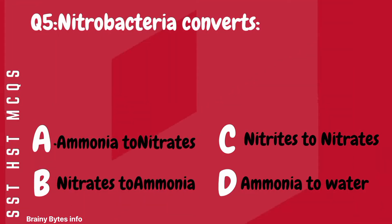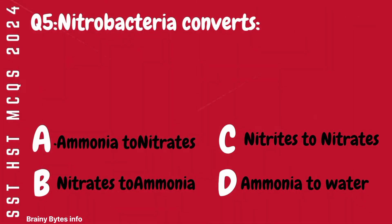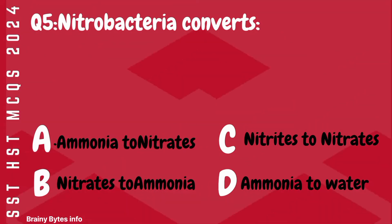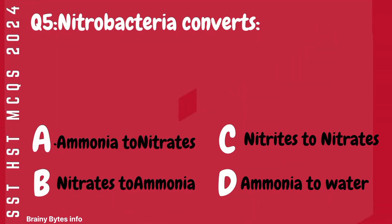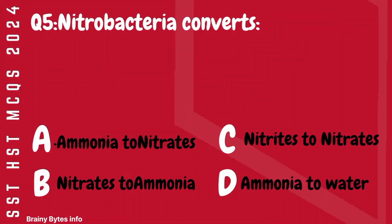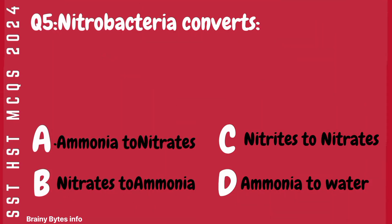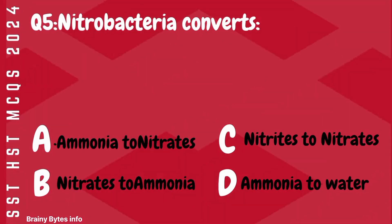Question 5. Nitrobacteria converts. A. Ammonia to nitrates. B. Nitrates to ammonia. C. Nitrites to nitrates. D. Ammonia to water.